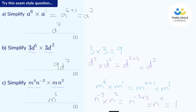Let's see where the marks come from. Part A: one mark for the answer. Part B: one mark for the nine, one mark for d to the power of seven. And for Part C, we're going to get two marks for writing m to the power of five. Now if you make a small mistake and you write n to the power of something, don't worry — as long as you've still written m to the power of five, you will get one mark.